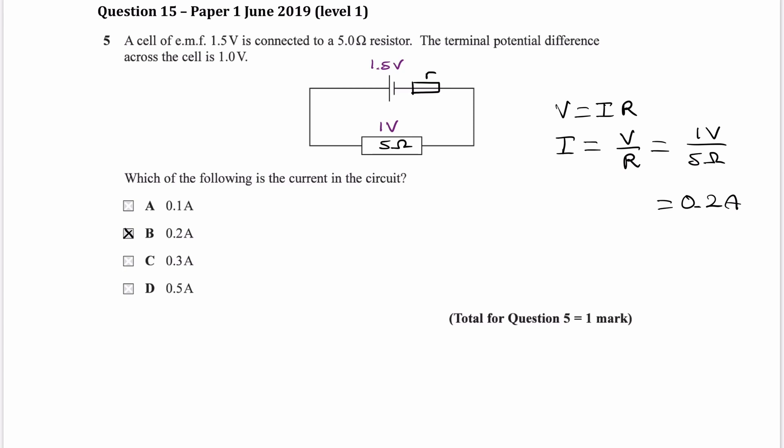So this is a series circuit, so that means that the current throughout the entire circuit is the same, which would be 0.2.